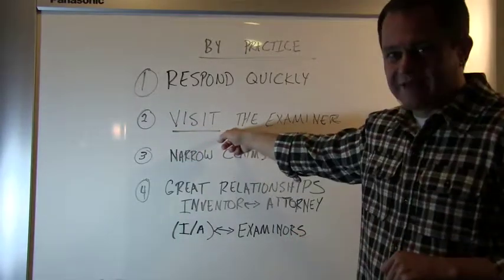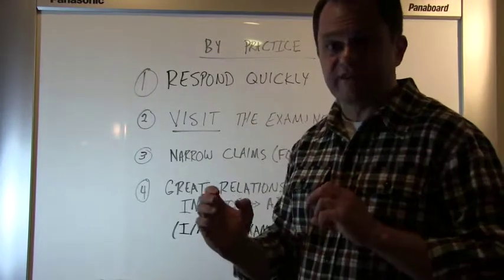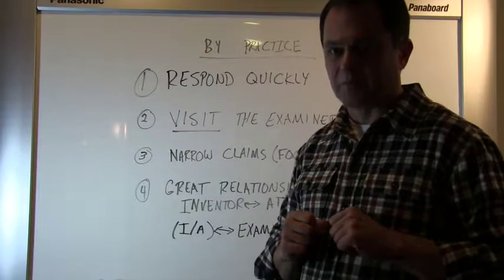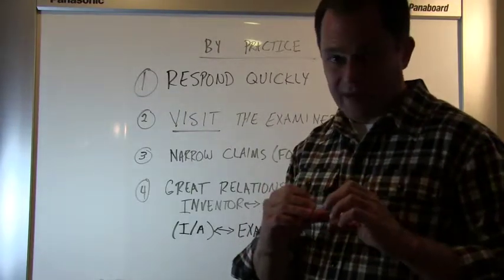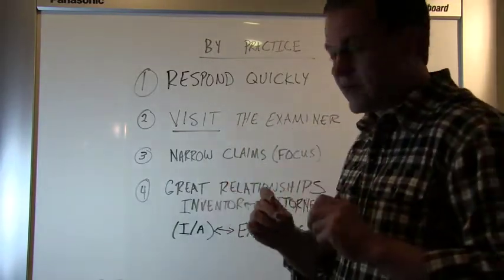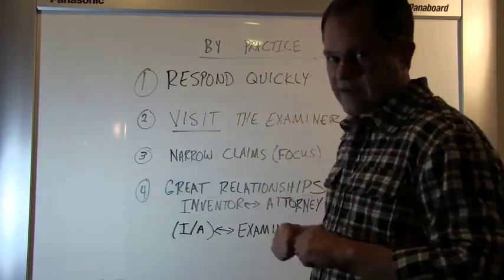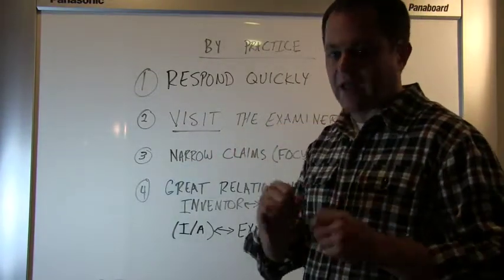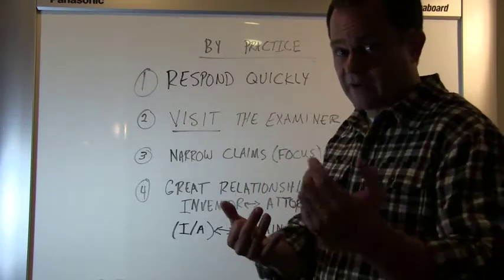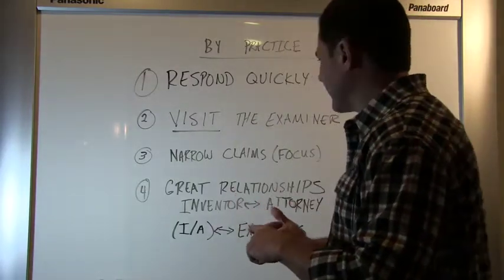While the invention's information is fresh on the examiner's mind is the very best time to get back in front of that patent examiner with a written response or better yet, number two, a visit. Visit the examiner if you can. Again, this is not as easy as it used to be because examiners do not all live in Washington DC anymore. But if you can locate your examiner and get their consent and meet with them, it is my experience that that is like a booster on a rocket. It gets the patent application looked at more seriously with greater understanding by both you and the examiner and results in patent applications that get granted more quickly.